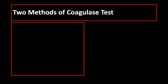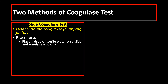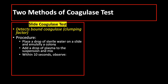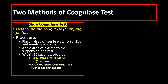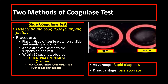There are two methods of coagulase test. The first method is the slide coagulase test, which detects bound coagulase — coagulase that is still attached to the bacterial cell wall. You place a drop of sterile water on a slide and emulsify a bacterial colony into it. Add a drop of plasma, like rabbit plasma, to the suspension and mix within 10 seconds. Then observe for agglutination for a positive result, like in the case of Staphylococcus aureus, or no agglutination for a negative result, like in the case of Staphylococcus epidermidis and Staphylococcus saprophyticus. Slide coagulase test is rapid, but it is less accurate.